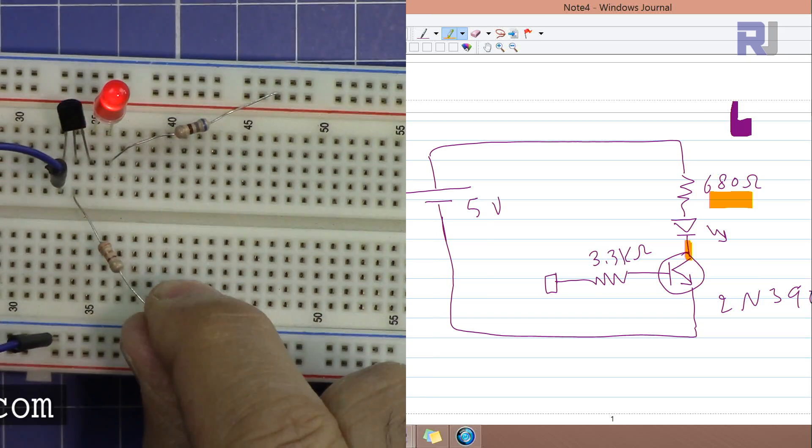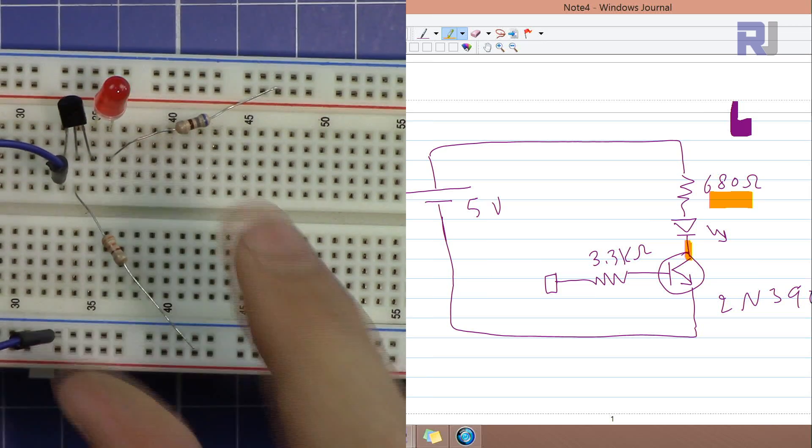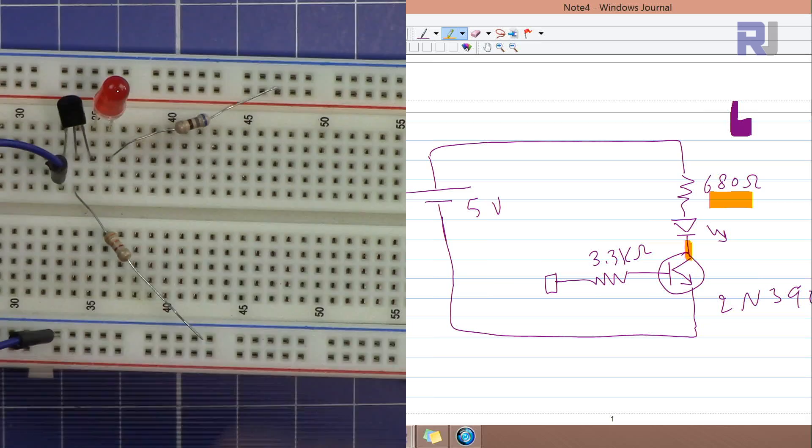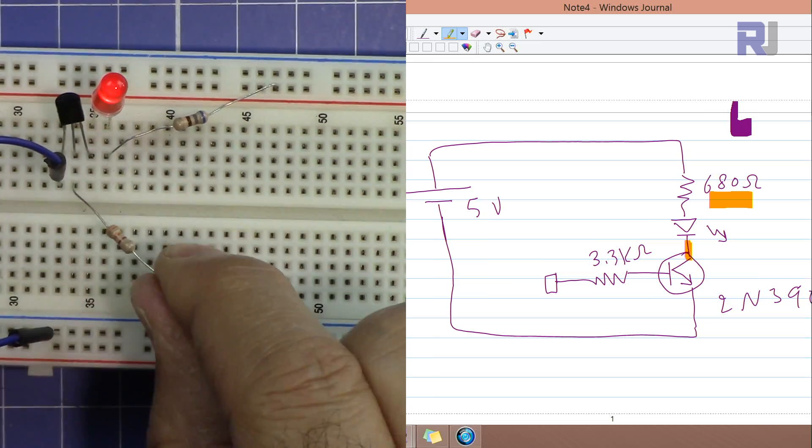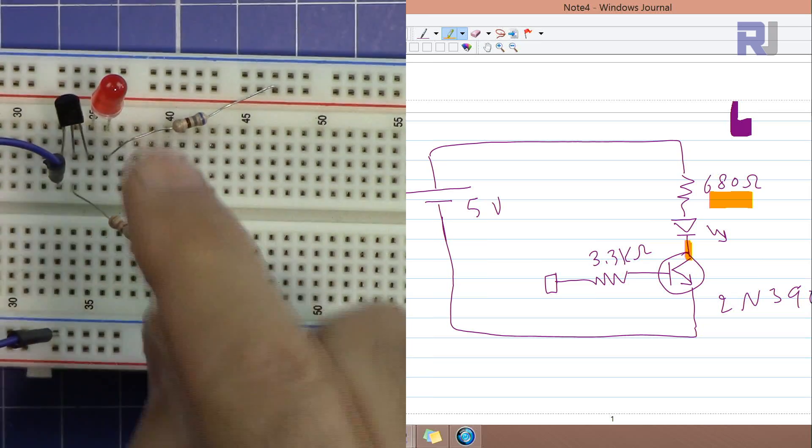If I touch this, you will see that light is on. As simple as that, you can create a touch sensor. This can be used in many ways and depending on application you can leave it on or you can also modify the circuit so when it's touched it stays on.